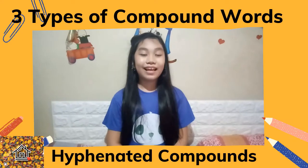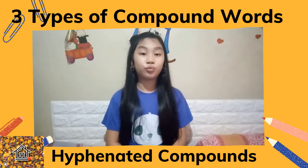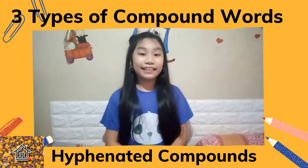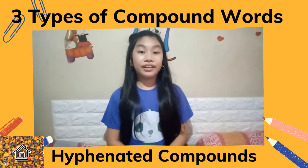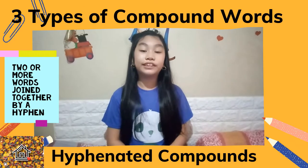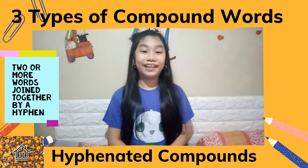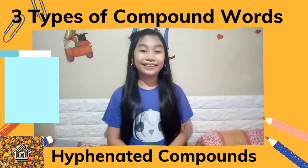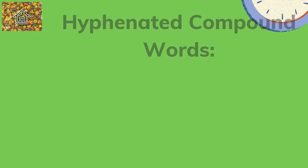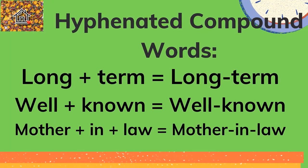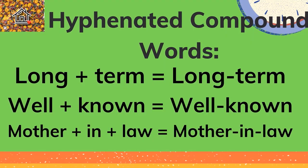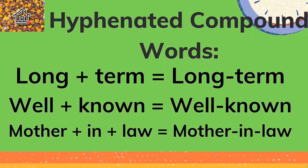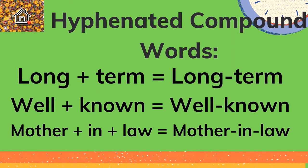And the last type of compound words is the hyphenated compounds. These are two or more words joined together by a hyphen. Examples of hyphenated compound words are long-term, well-known, and mother-in-law.